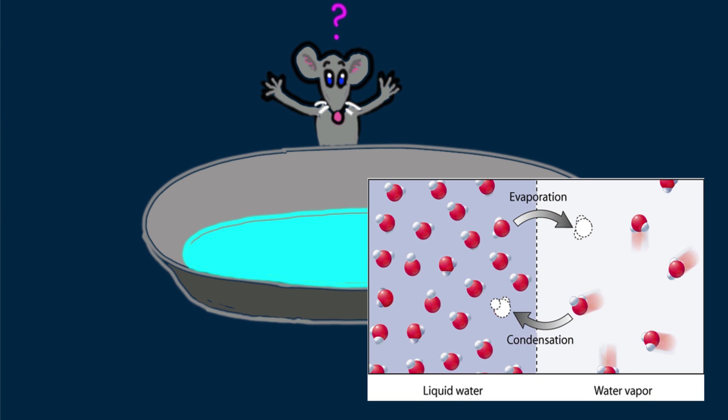If we think about all those water molecules moving helter-skelter, we know there's a lot of activity occurring at the molecular level. Some molecules leave the surface while others condense on the surface.